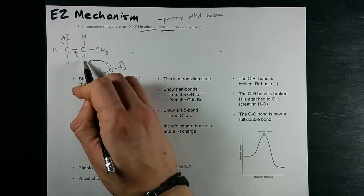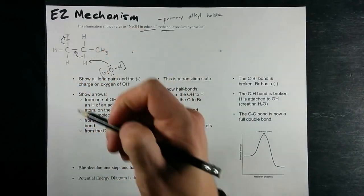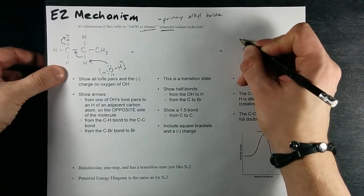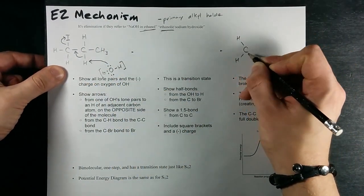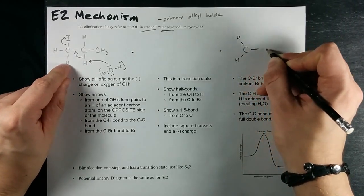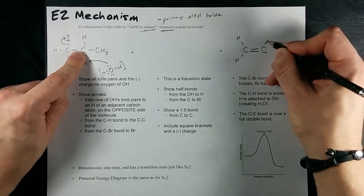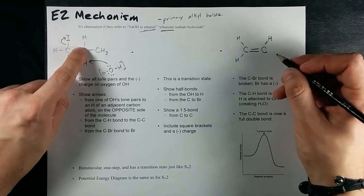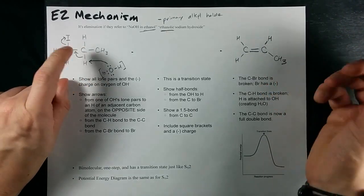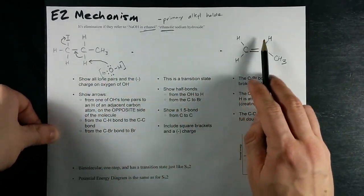Now take a look. I've got an attack here. I've got electron flow this way and I've got the I falling off over here. In the end, I'm going to end up with that carbon, which has two hydrogens on it, attached double-bondedly to this carbon, which has one H left on it. After all, I removed this one and a CH3 group. I've turned my alkyl halide into an alkene.